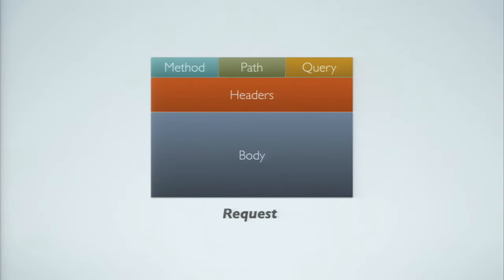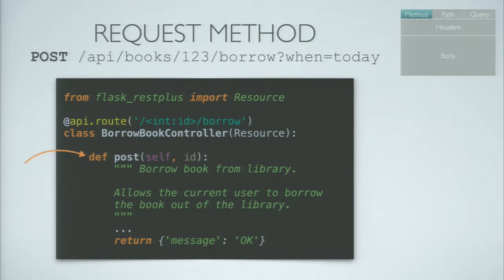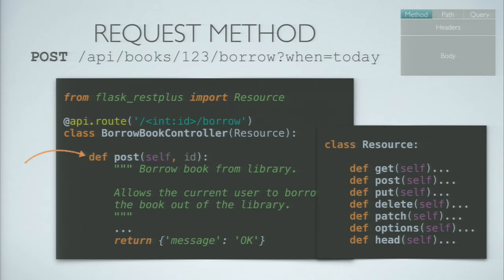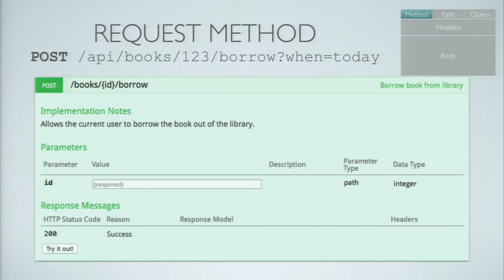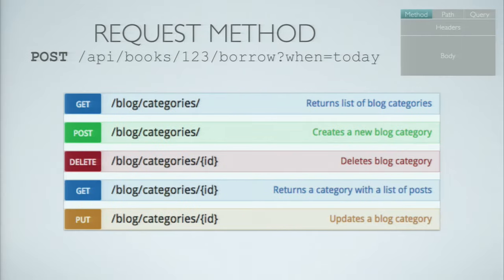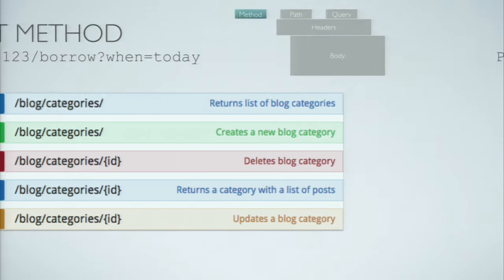Now let's get into exactly how to use Flask-RESTPlus. Starting with the request method: all you need to do is define a class which inherits from something called Resource in the library, and then in that class define functions matching by name the different HTTP operations — a GET method, POST, PUT, and so on. You'll notice the documentation put in the method automatically becomes the documentation displayed in the Swagger UI, and if you have a list of methods they become a nice interactive list.